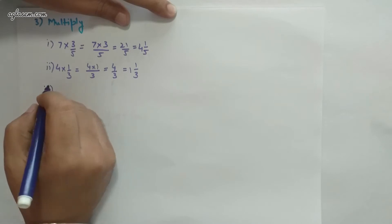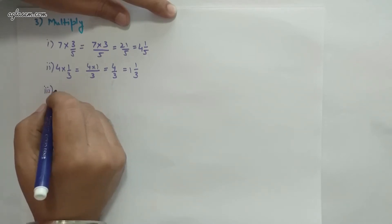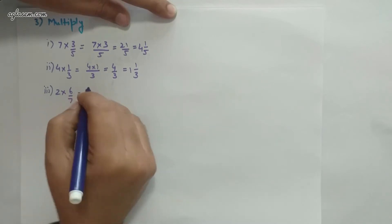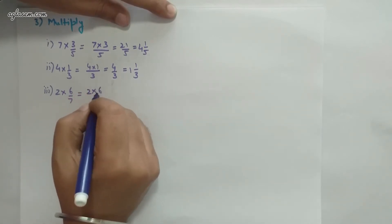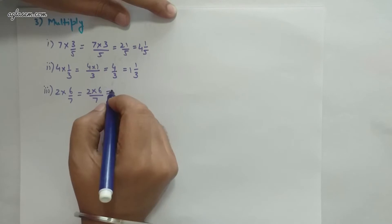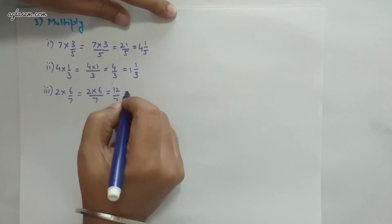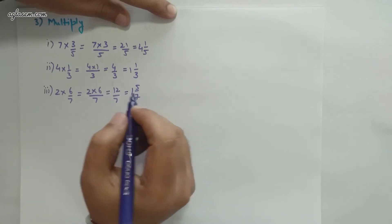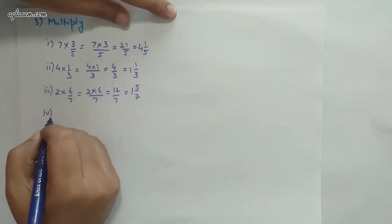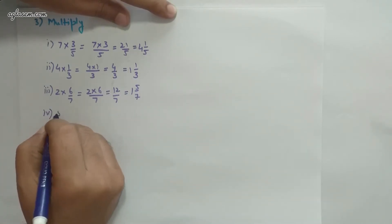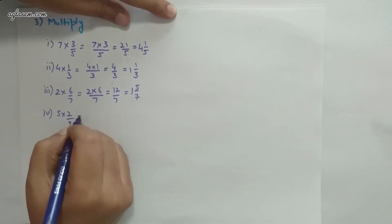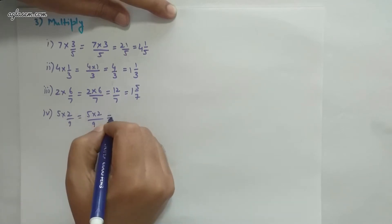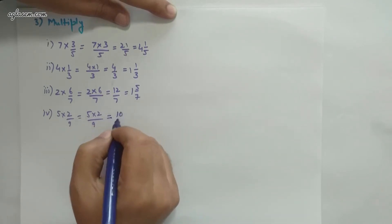Part 3: 2×(6/7). Multiply the numerators: 2×6 divided by 7 = 12/7. Converted to a mixed fraction, that is 1 and 5/7. Part 4: 5×(2/9) = 10/9, which is 1 and 1/9.